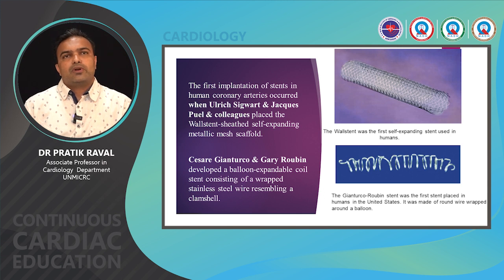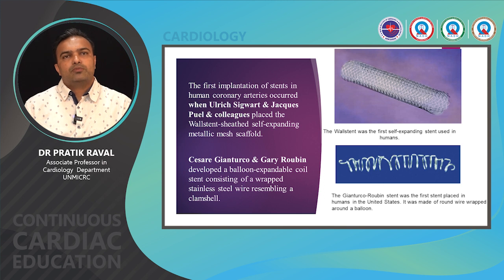Coronary stents were first introduced with the wall stent being the first stent implanted into human coronaries — it was a self-expanding stent. Subsequently, Palmaz and Rubin developed a balloon expandable stent made up of a stainless steel coil wrapped around a balloon.